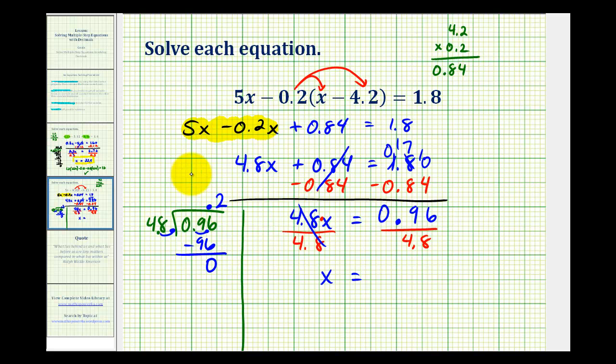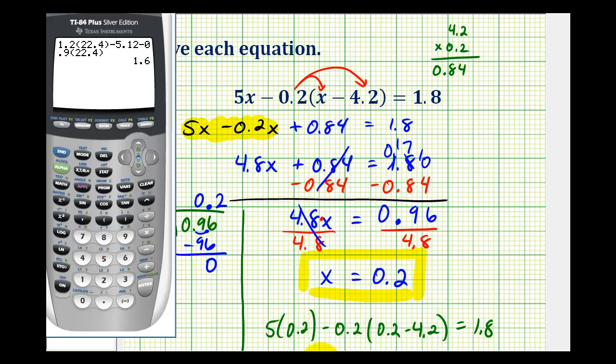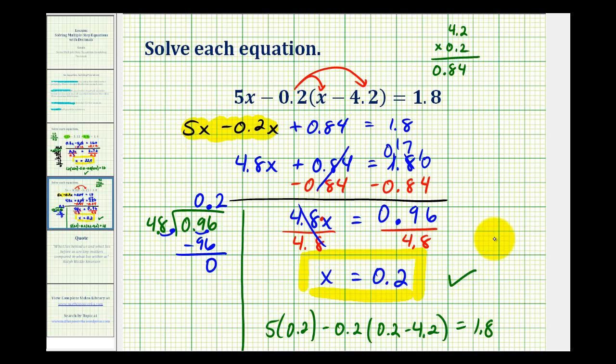So x is equal to 0.2 or 2 tenths. Which means if we replace x with 0.2, it must satisfy the original equation. So to check this, we'd have 5 times 0.2 minus 0.2 times 0.2 minus 4.2 must equal 1.8. So let's go ahead and check this with the calculator. And again, this shows that our solution is correct. I hope you found this helpful.